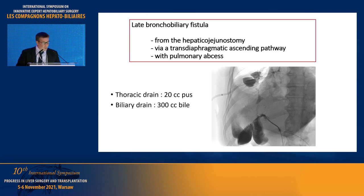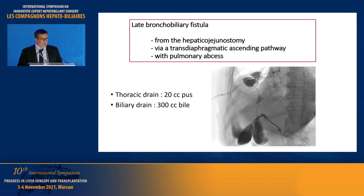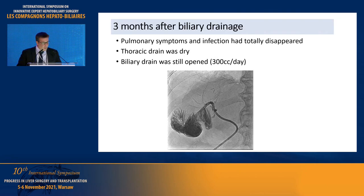In the following days after biliary drainage, the thoracic drain gave 20 millilitres of pus and the biliary drains 300 millilitres of bile. In this situation we decided to wait with both drains in place, and three months after drainage, pulmonary symptoms and infection had totally disappeared.